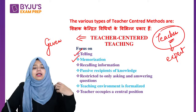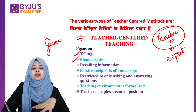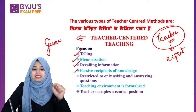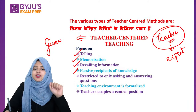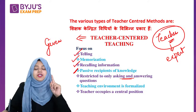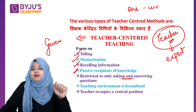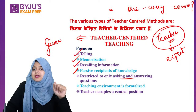The teacher will tell students everything, and students will just memorize what the teacher said. Students receive information from the teacher, recall it, and children are passive — completely inactive. Children only do what the teacher says. A question that comes frequently in exams is: Is teacher-centered method of teaching a one-way communication?